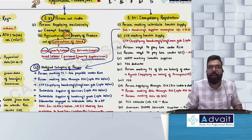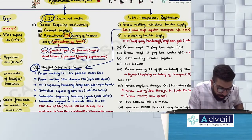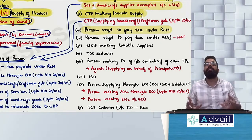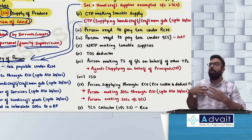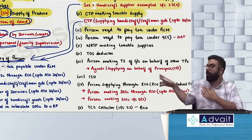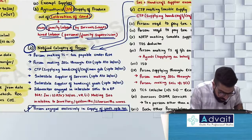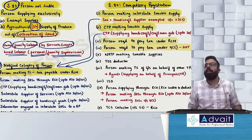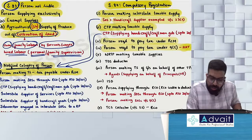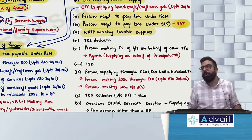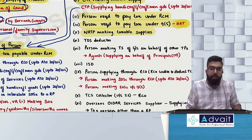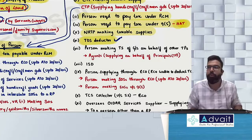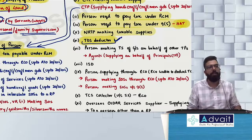Compulsory registration is required by persons making taxable supply. A casual taxable person (CTP) making taxable supply is also required to take compulsory registration — though CTP supplying handicraft goods and craftsmen goods is exempted under section 23(2). A person who is required to pay tax under reverse charge (RCM) also needs compulsory registration — the supplier to them is not required, but the recipient paying RCM is. Person required to pay tax under section 9(5) — aggregators providing housekeeping, accommodation and transportation services — and NRTP making taxable supplies in India are also required. Compulsory registration means even if you do supply of just 1 rupee. TDS deductors are also required for compulsory registration.